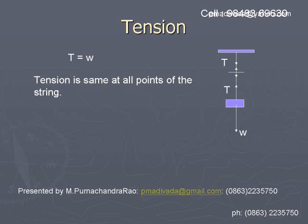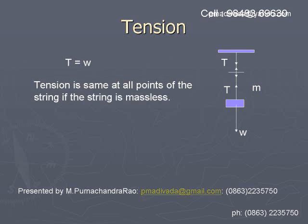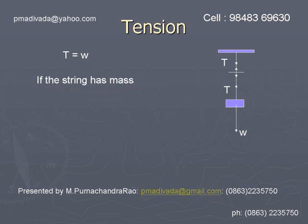The tension will be the same along the length of the string if the string is massless. If the mass of the string is negligible — very, very small — then we consider the tension to be uniform along the entire length of the string.